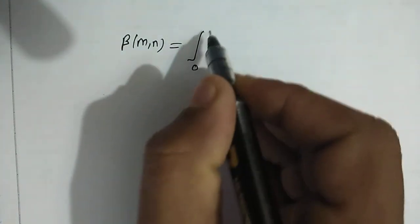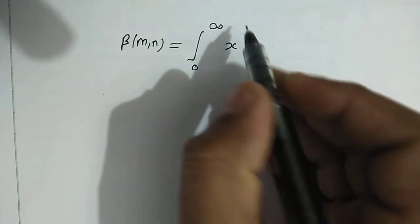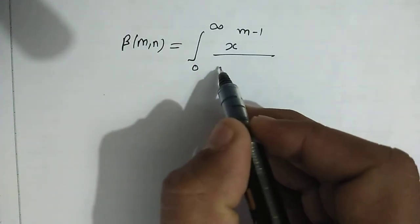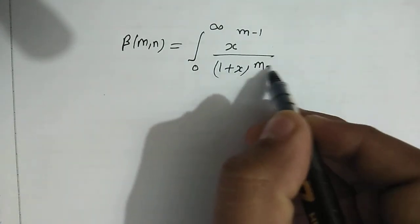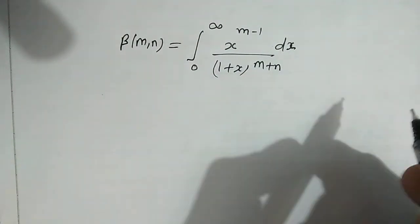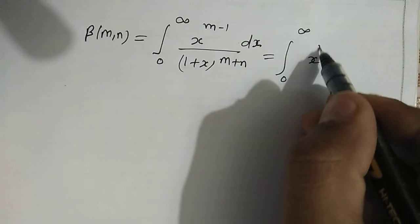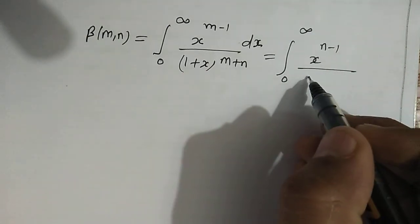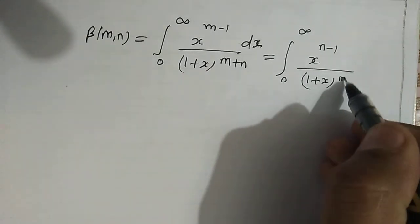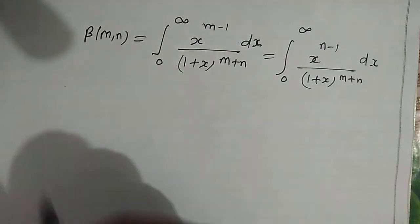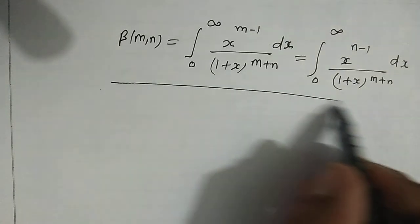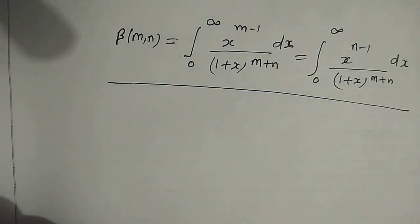We also have one more form: beta(m, n) equals the integral from 0 to infinity of x^(m-1) divided by (1+x)^(m+n) dx. Equivalently, it can also be written as the integral from 0 to infinity of x^(n-1) upon (1+x)^(m+n) dx. This is another form of the beta function. If you like my video, please like, share, and subscribe. Thank you.